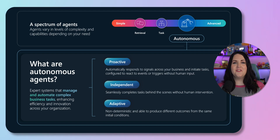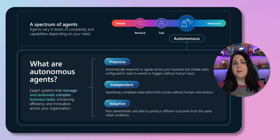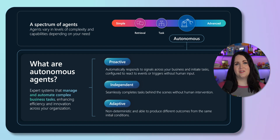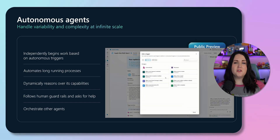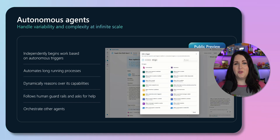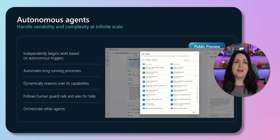And on the other end of the spectrum, what we're talking about today is autonomous agents. What sets these apart is they operate independently, dynamically planning and learning from the process. They can adapt to changing conditions and make decisions without constant human intervention. These autonomous agents can begin work based on more than just a chat request from a human — they can be triggered by events using the ecosystem of connectors that the Power Platform has to offer.